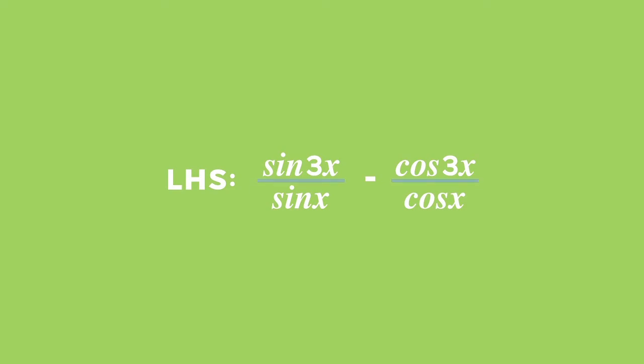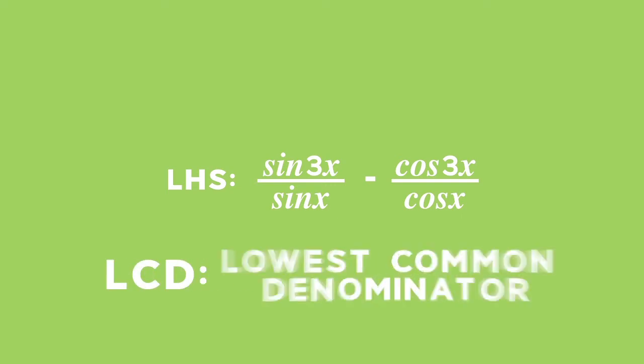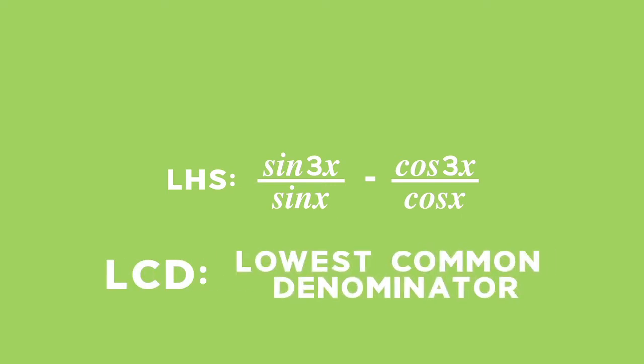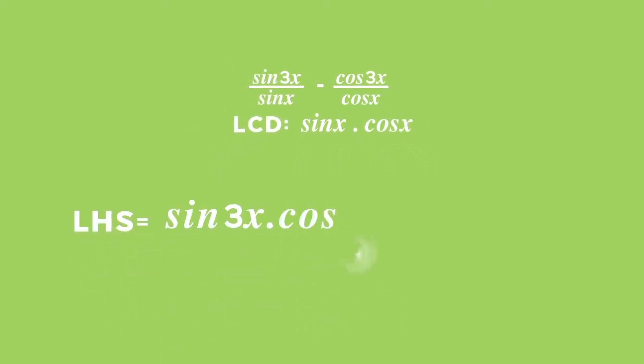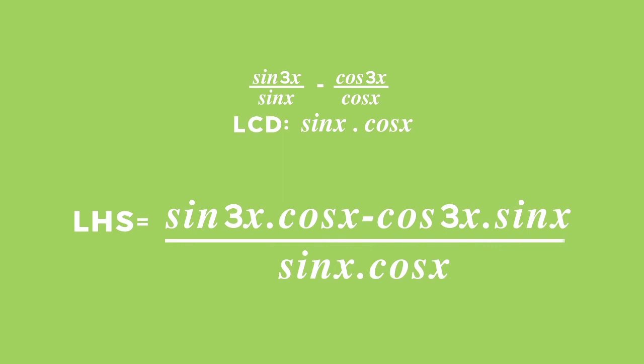Also notice the fractions. Hence, we will need to find the LCD, or lowest common denominator, to further simplify. By finding the LCD of sin x times cos x on the left-hand side, we can subtract the two fractions to get sin 3x times cos x minus cos 3x times sin x, and that's all over sin x times cos x.